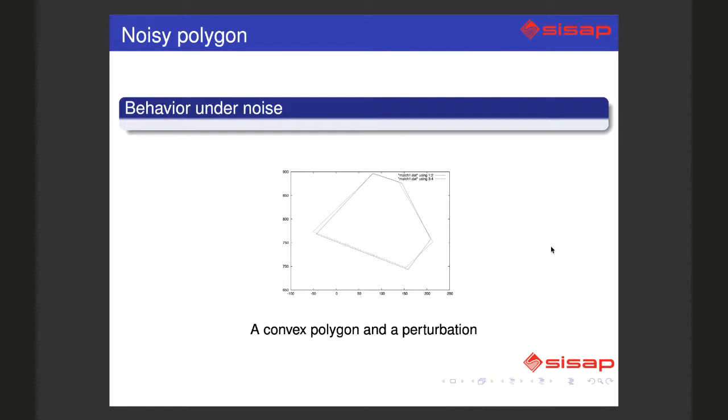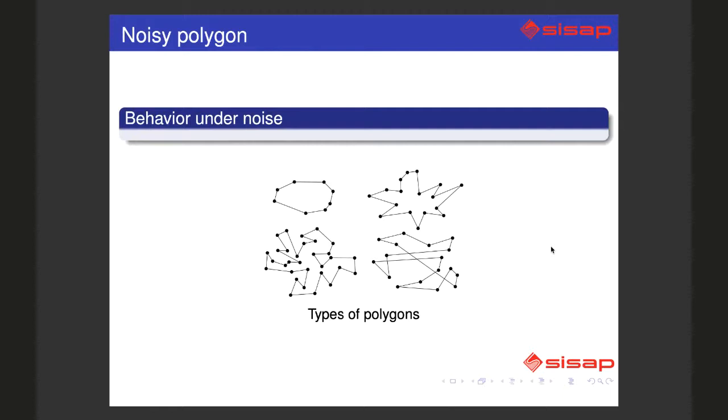So we devised a heuristic to solve just that problem. Let me explain different types of polygons. Here the top left is a convex polygon, this is a star-shaped polygon, this is a Jordan or non-self-intersecting polygon, and this is a general polygon. The behavior of noise in each one of these is different.